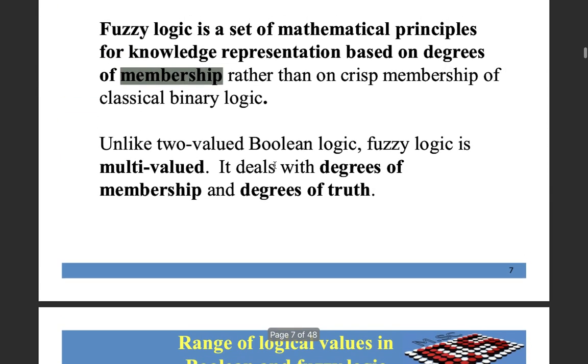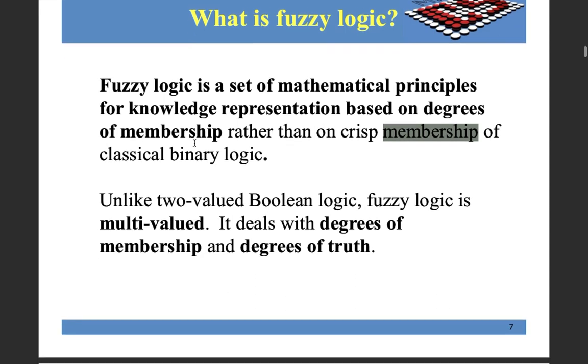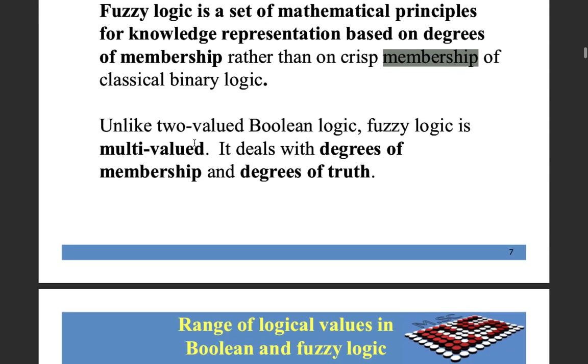In this fuzzy logic, we try to assign degree of membership to each and every record. So let's see how we classify the members. In crisp membership or in classical membership, we try to assign whether an object belongs to that group or not by giving a 1 and 0 value. But in fuzzy logic, we will try to give it a degree of membership.